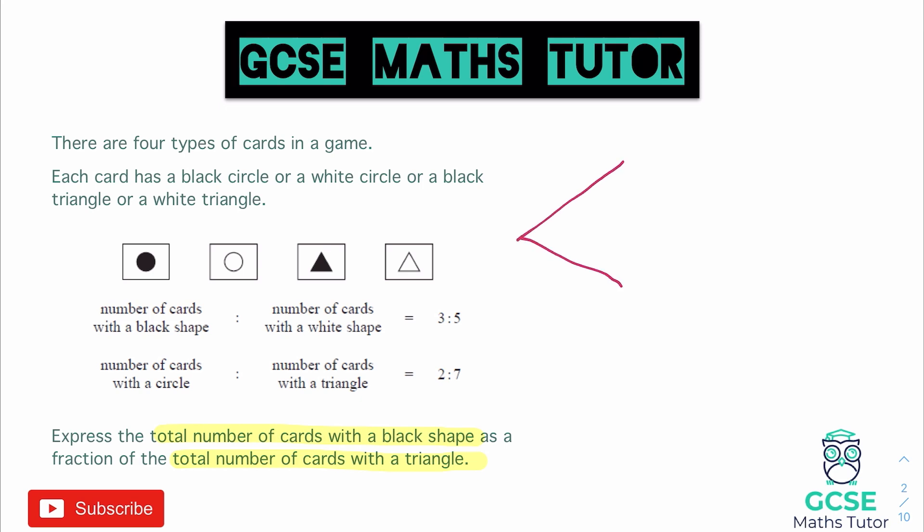So if we split it up into black and white shapes, the fraction that are black, and we can see that from this ratio here, would be three out of eight, and the fraction that's white is going to be five out of eight.